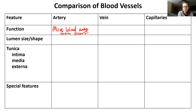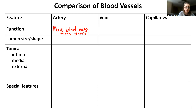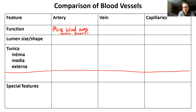In order to move blood away from the heart, arteries need specific anatomical features. All blood vessels share similar anatomical features we can compare: lumen size — the lumen is the opening — and tunicas, which are the layers. They have a tunica intima, a tunica media, and a tunica externa, plus a row for special features.